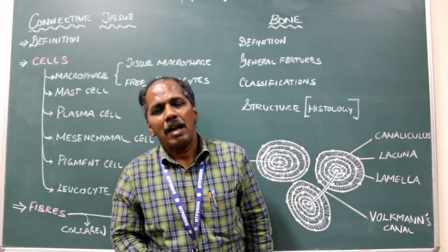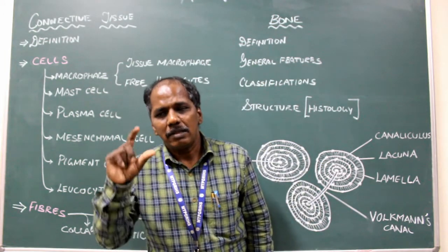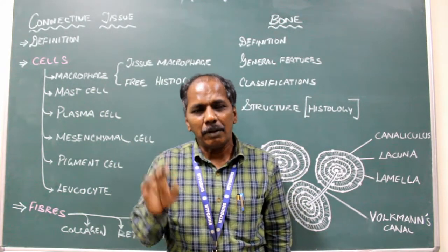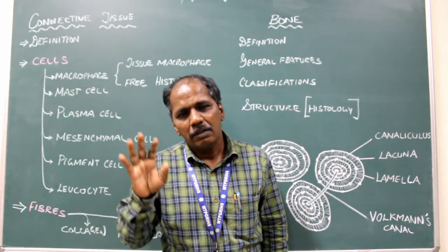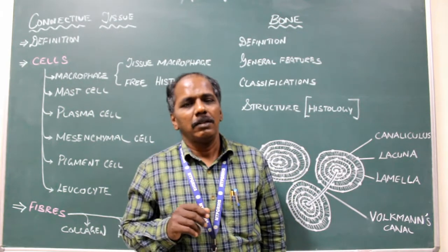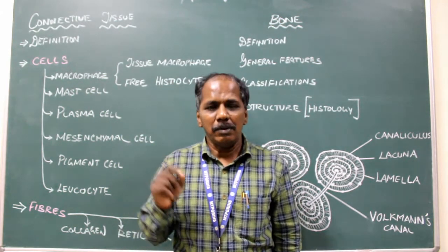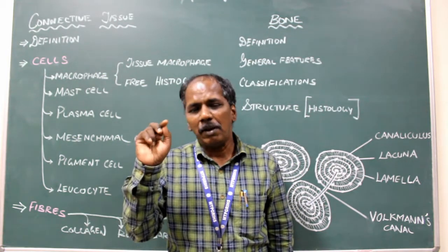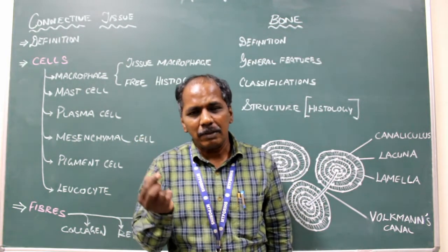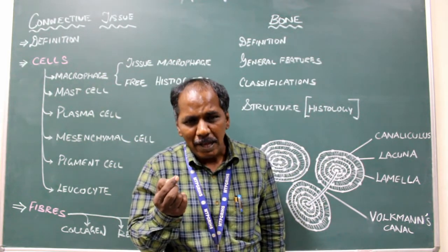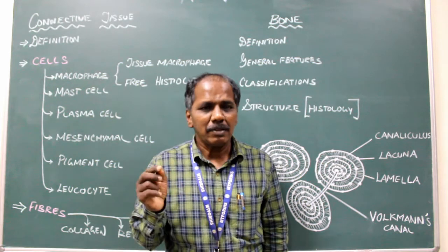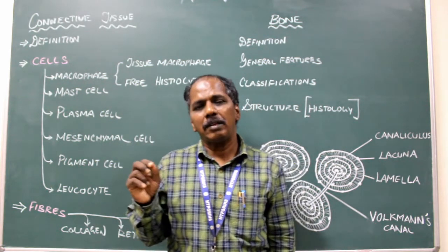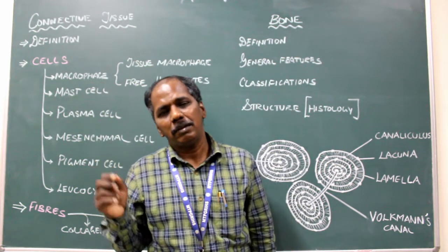And sacrum — it consists of a single fused structure made up of five sacral bones. And the coccyx is like a small piece attached to the base of the sacrum, which is made up of four pieces. So totally there are 33 vertebrae.